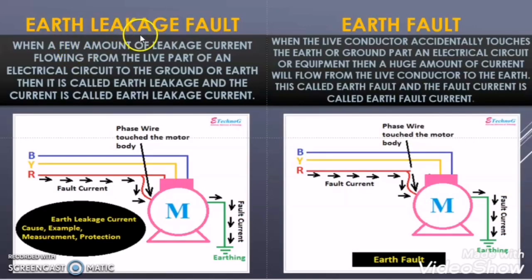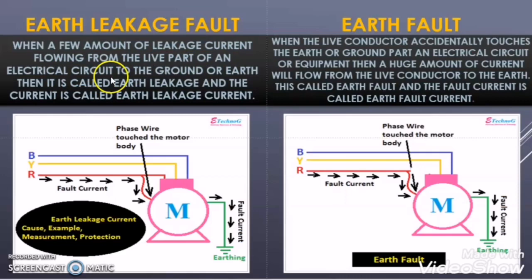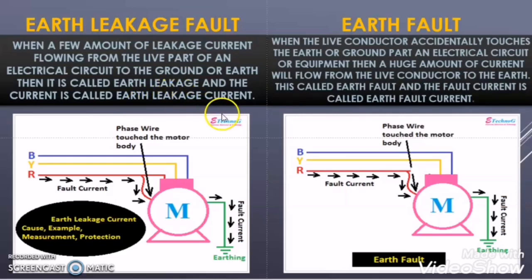So what is earth leakage fault? When a small amount of leakage current is flowing through the live part of an electrical circuit to ground or earth, then it is called earth leakage fault. And the current which is flowing due to earth leakage fault is called earth leakage current.